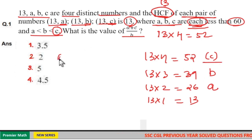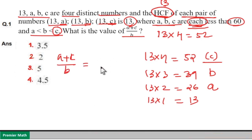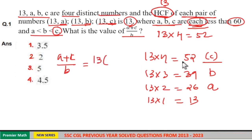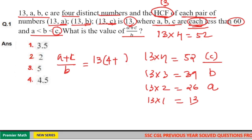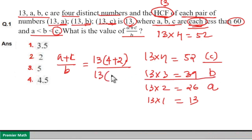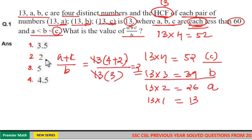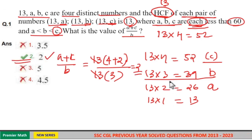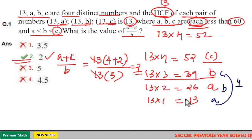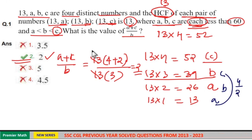Now we need A plus C by B. A plus C by B — all are multiples of 13, so 13 will cancel. Taking C as 13 into 4, A as 13 into 2, B as 13 into 3: (4 plus 2) by 3 is equal to 2. Answer 2 is in the option. Even if you take C as 13 into 3, B as 13 into 2, A as 13 into 1: A plus C is 1 plus 3 equals 4, divided by B which is 2, gives 4 by 2 equals 2. So the answer is 2.